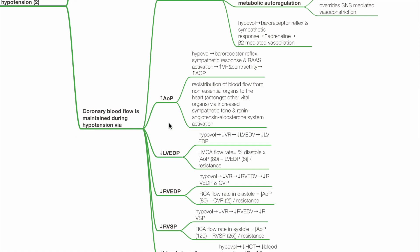The second mechanism is increased aortic pressure. Hypovolemia leads to baroreceptor reflex and increased sympathetic tone, along with renin-angiotensin-aldosterone system activation. This leads to increased venous return via redistribution of blood flow from non-essential organs to the heart, and increased contractility, which leads to increased aortic pressure.